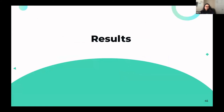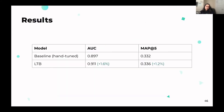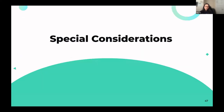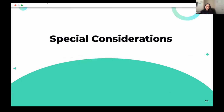Here are the results. Our baseline was hand-tuned boost values. With the Learning to Boost model, we achieved a 1.6% increase in AUC and a 1.2% increase in MAP at 5. This may not look like a huge percentage, but given the sheer volume of queries we see, the number of queries that benefit from this improvement is very considerable.